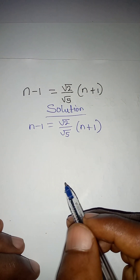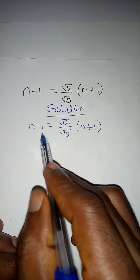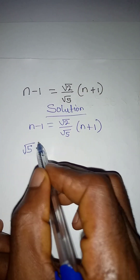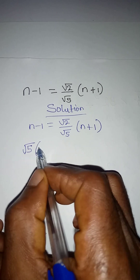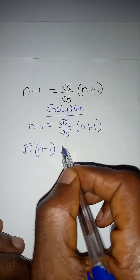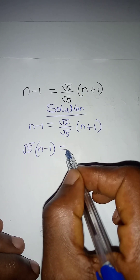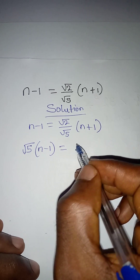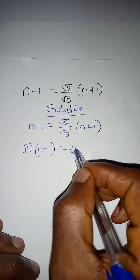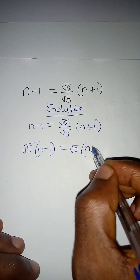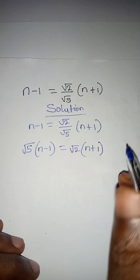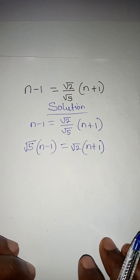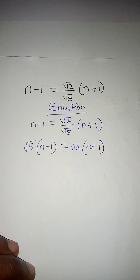The first thing we are going to do is to multiply everything by root 5. So we have root 5 multiplying n minus 1, and it will equal root 2 into bracket n plus 1.